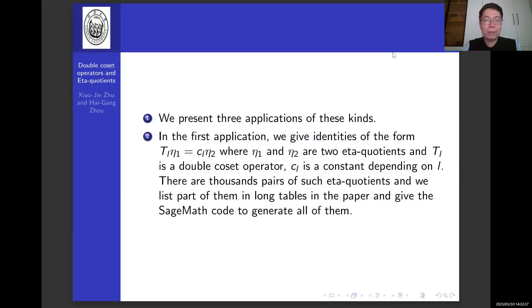We present three applications of these kinds. In the first application, we give identities of the form Tl acting on eta1 equals Cl times eta2, where eta1 and eta2 are two eta quotients, and Tl is a double coset operator. Cl is a constant depending on l. There are thousands of pairs of such eta quotients, and we list part of them in long tables in the paper and give the SageMath code to generate all of them.